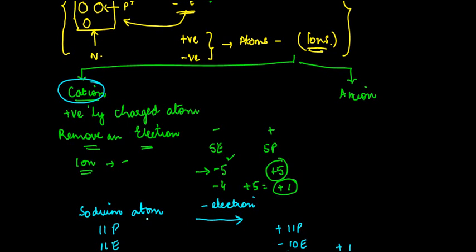So this sodium atom which was there, whose symbol was Na, will become sodium with a positive sign. Why this positive sign? Because it has one positively charged proton which is more than the electrons.